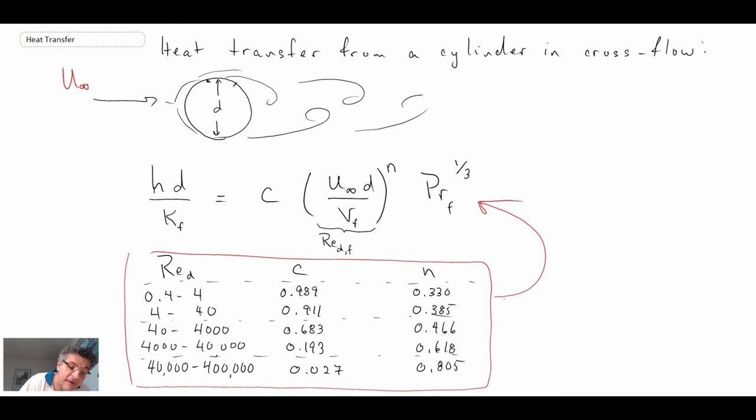Here we have U infinity. A couple of other things to note, we have F, and we'll talk about that in a moment. That denotes the film temperature, but the main thing is just as the flow around the cylinder changes, the convective heat transfer characteristics will change.